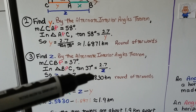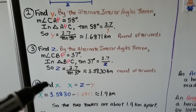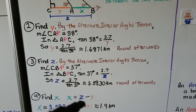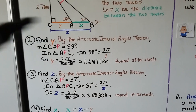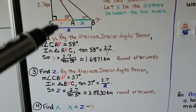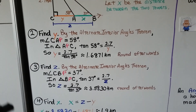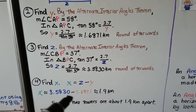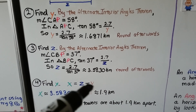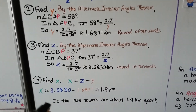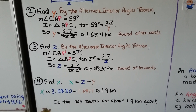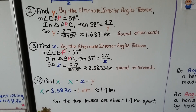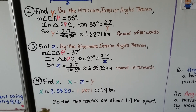Now we find X, the distance between the towers. X equals Z minus Y, so 3.5830 minus 1.6871, which is approximately 1.9 kilometers. The two towers are about 1.9 kilometers apart from each other.